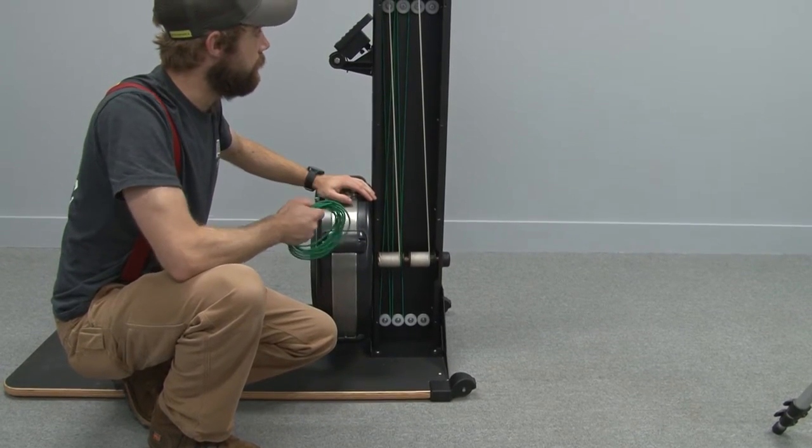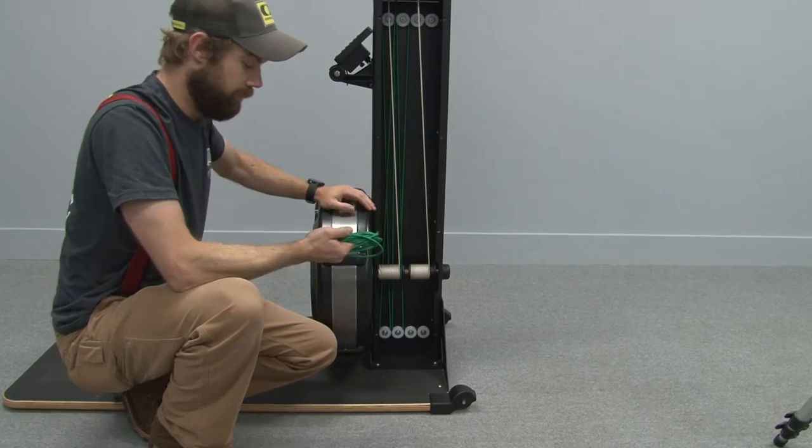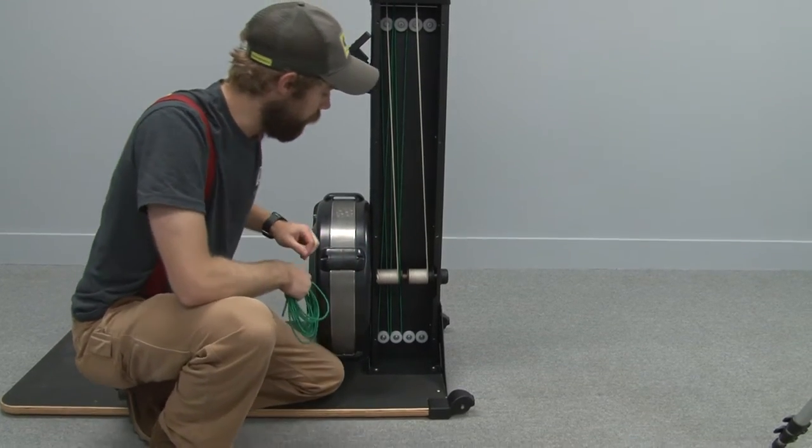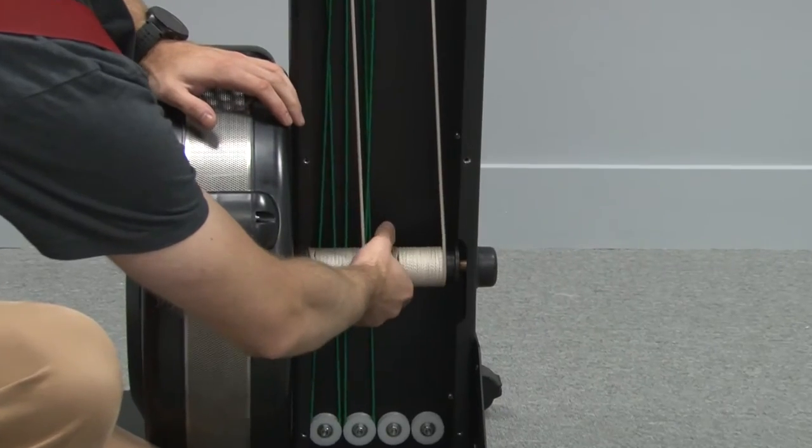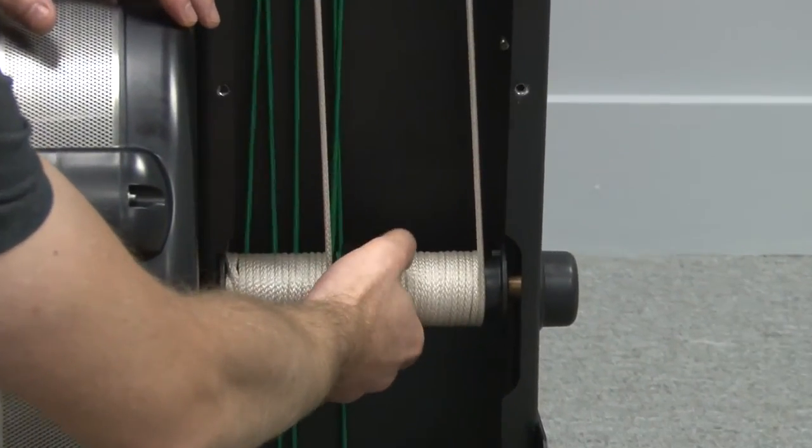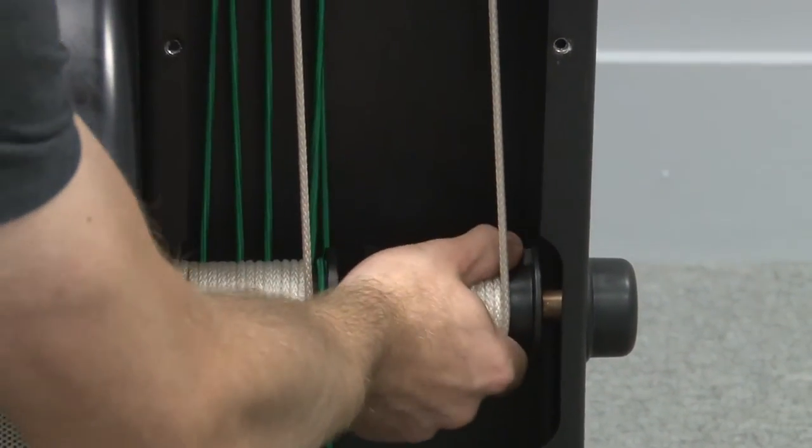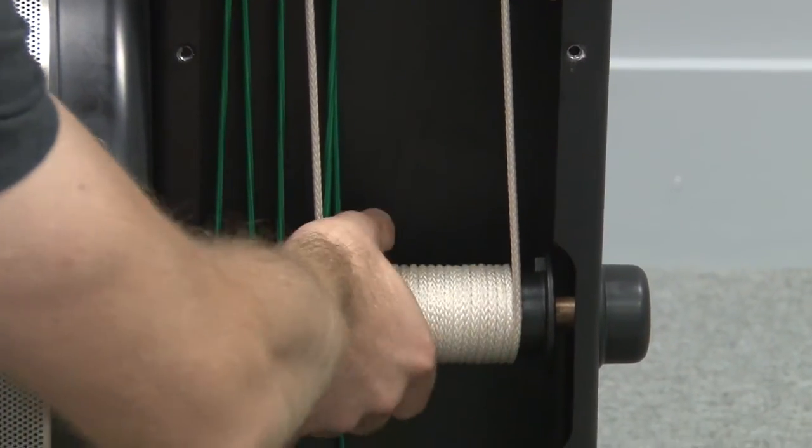We're going to replace the skier 2 shock cord, so the first thing we'll want to do is make sure the spool is spooled up all the way and the white cord is wrapped all the way so it's tight on the spool.